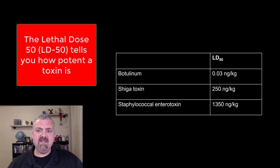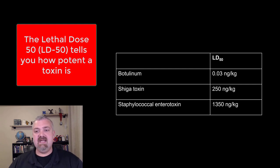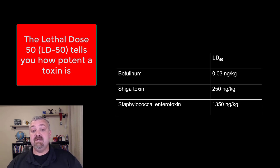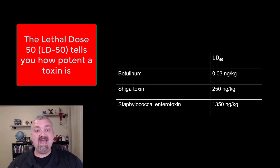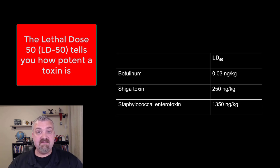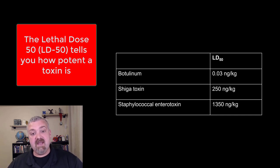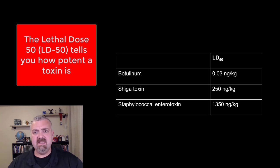Just a couple more numbers with the lethal dose — it tells you how potent a toxin needs to be to actually lead to death or serious illness. Botulinum toxin only takes 0.03 nanograms per kilogram, whereas the shiga toxin — which is what E. coli O157:H7, the enterohemorrhagic E. coli, would release — takes 250 nanograms per kilogram. And then staphylococcal enterotoxin takes 1,350 nanograms per kilogram. So you're looking at a massive difference in how much of a toxin it takes to be lethal.